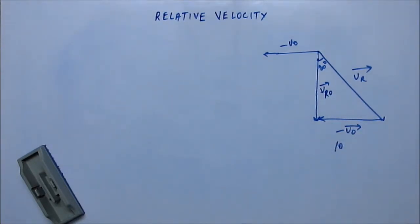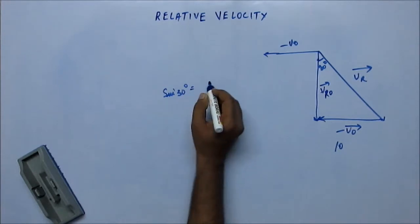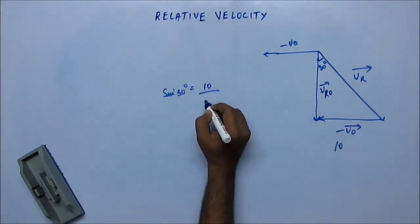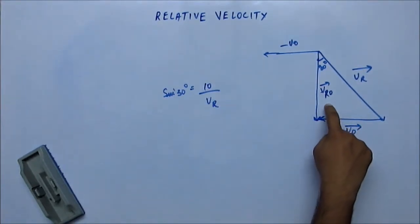We will use sine 30 degrees equals perpendicular 10 upon hypotenuse which is VR. So VR from here will come out as 20. Similarly, if we have to find velocity of rain with respect to observer, finding that is also pretty simple.